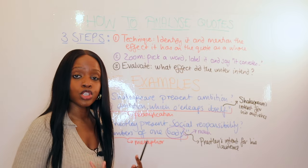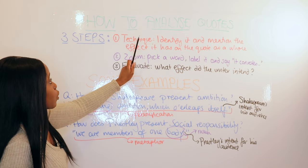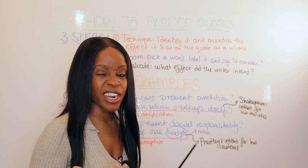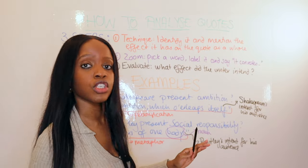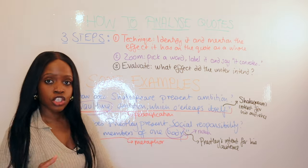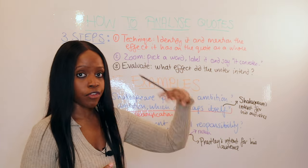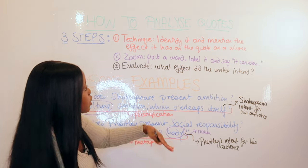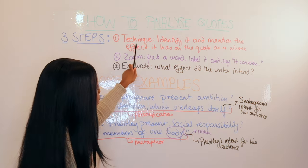Step number one when analyzing any quotation in your English essay: begin by mentioning the technique. A lot of students do this and then stop there before moving on to another paragraph. Assuming you've already selected your quotation — you've opened with your point answering the question, then selected the quotation — after that, the first thing you need to do is identify the technique, but you don't stop there.